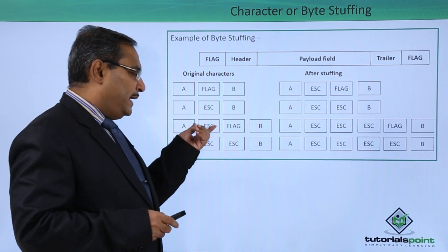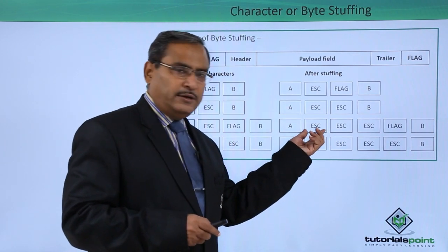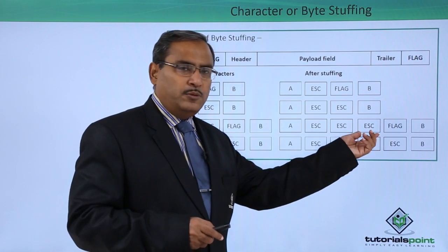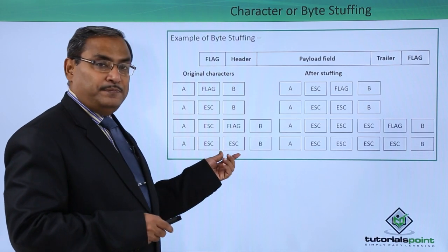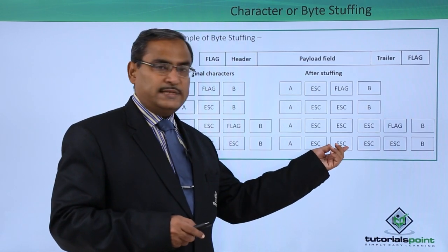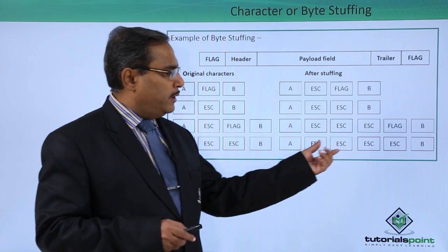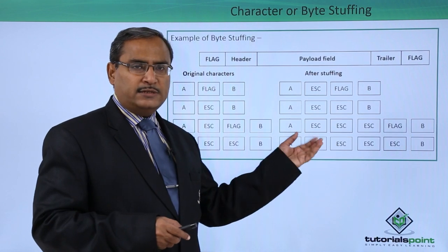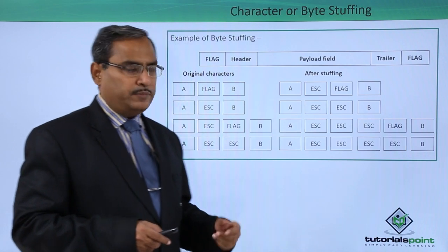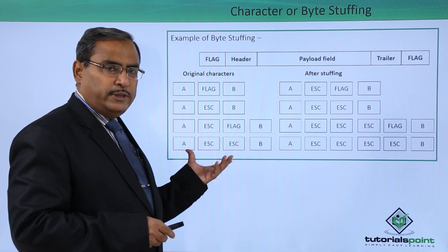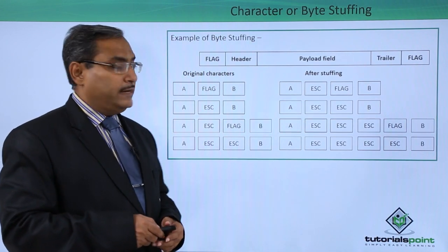Suppose we have escape followed by flag in the data. Then we stuff in this way: an escape character is stuffed before this escape, and an escape character is stuffed before this flag. At the receiving end, whenever we get a pair of escape characters we take one out, and whenever we get an escape before a flag we remove the escape. Ultimately, we arrive back at the original data frame. That is known as character or byte stuffing.